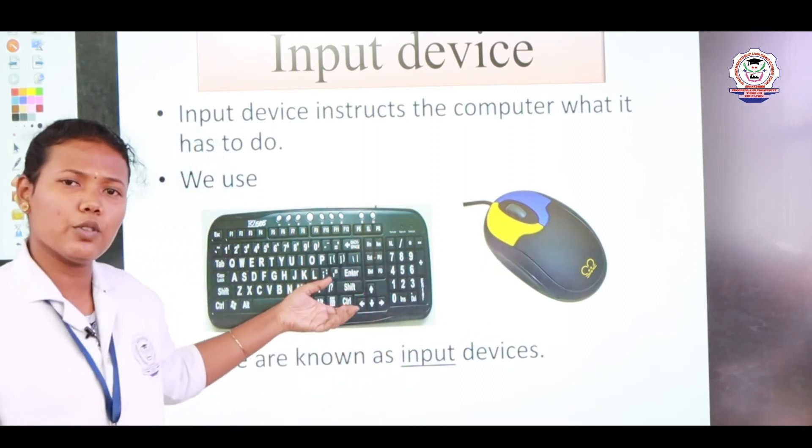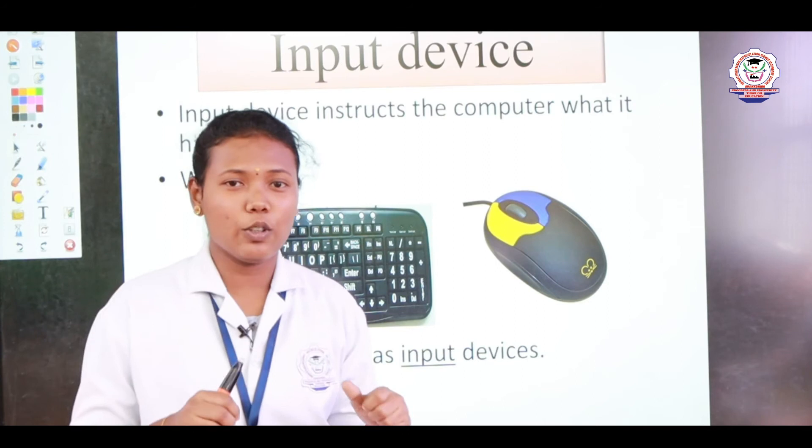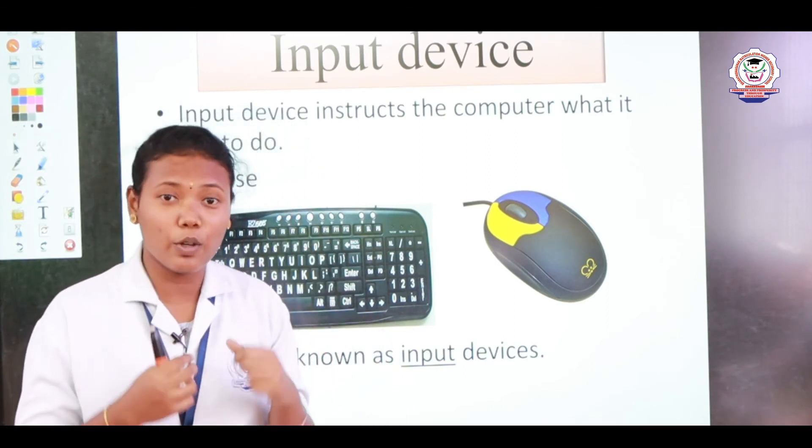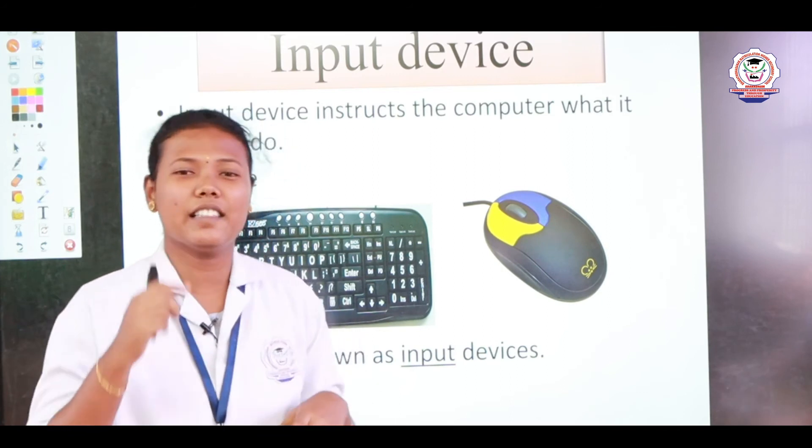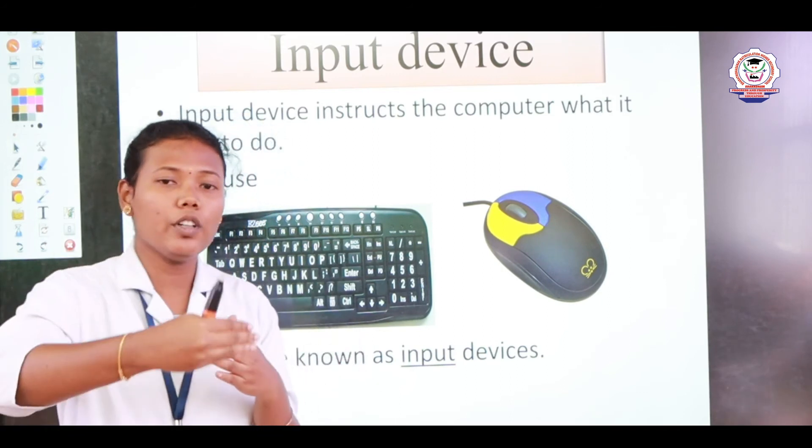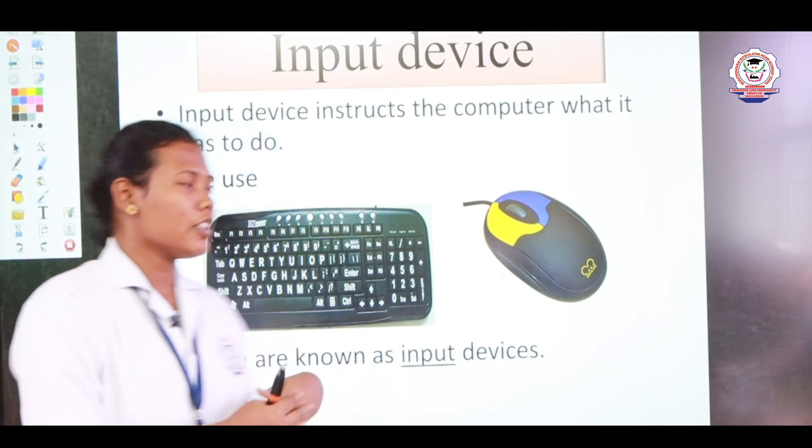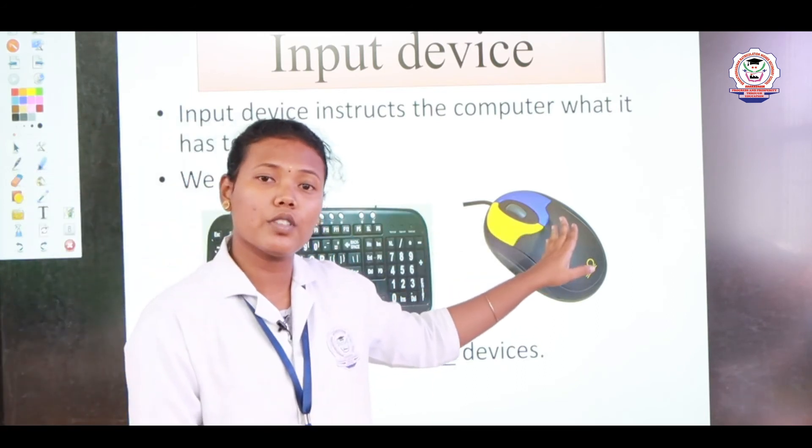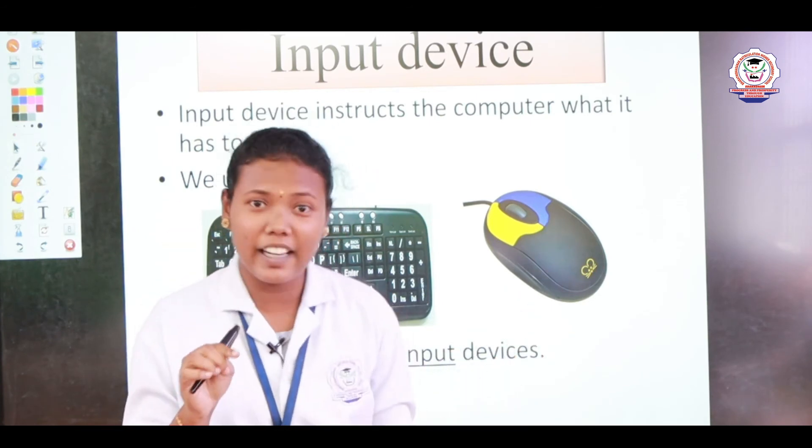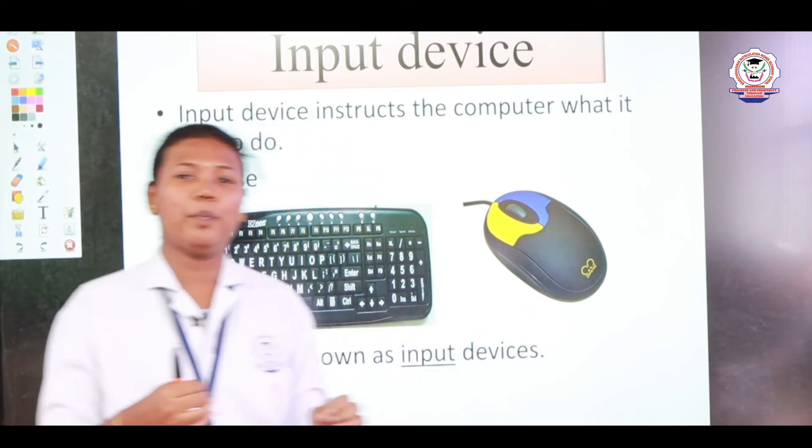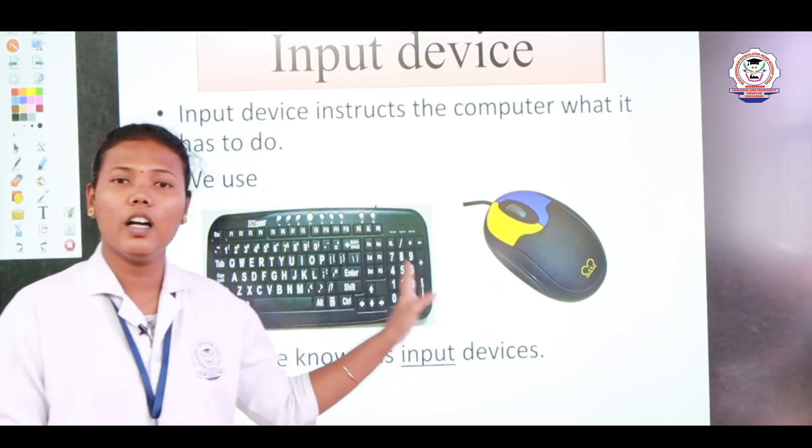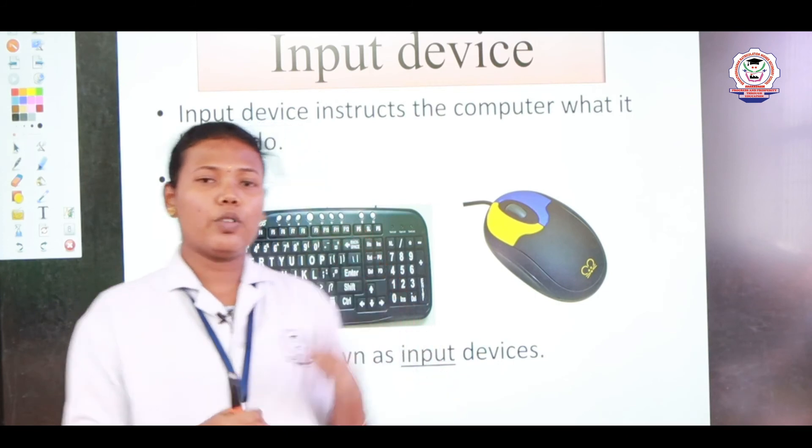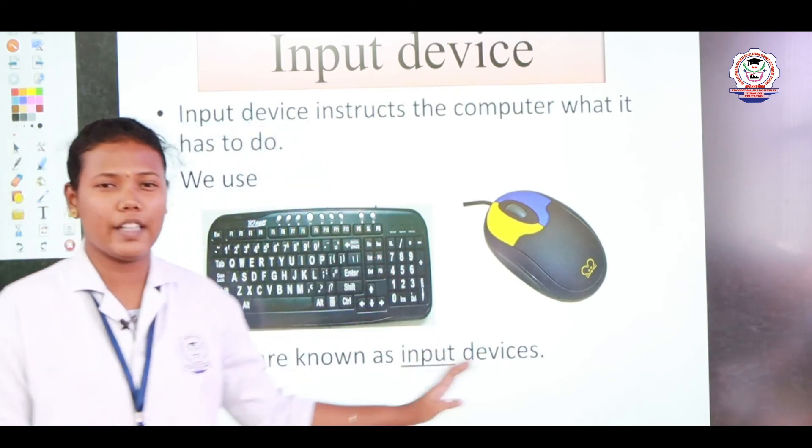We have input devices as keyboard and mouse. For what purpose do we use keyboard here? For typing. If I want to type my name, what should I do? I want to type my name - that is the input. What am I giving as input? My name. Similarly, what will be the input of mouse? We will click, we will select - that is the input. These two are connected to the monitor and CPU. These are called input devices.